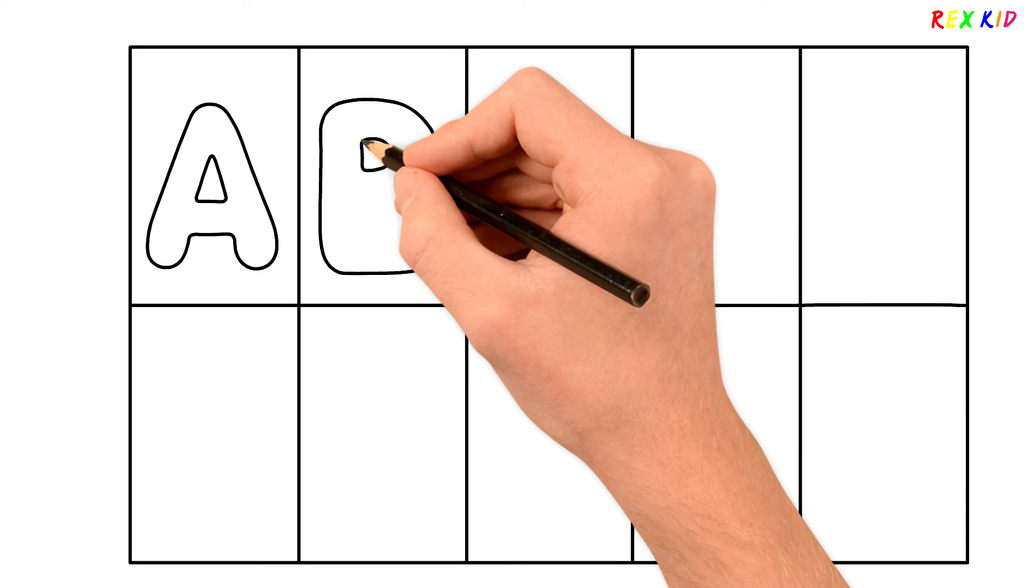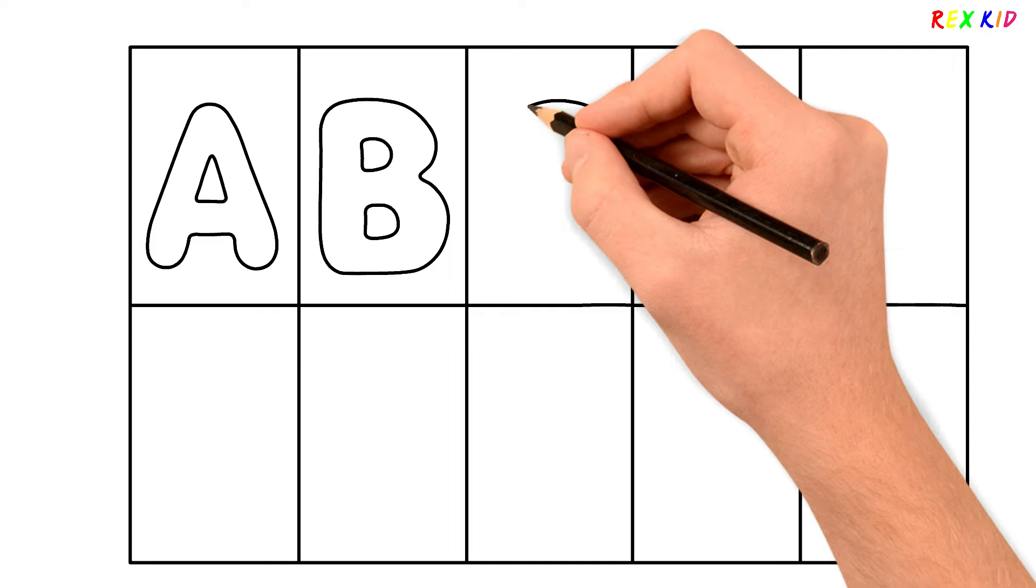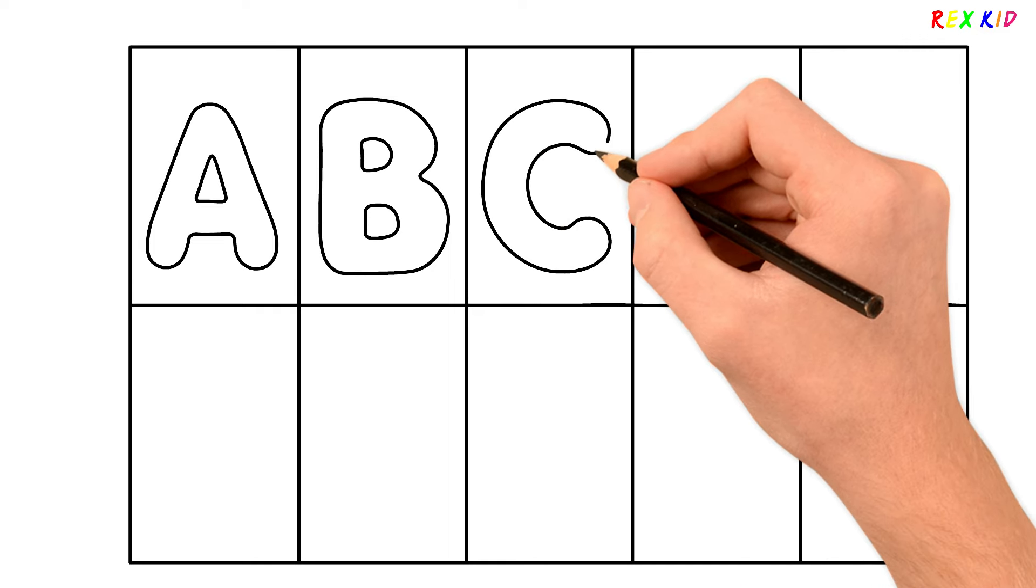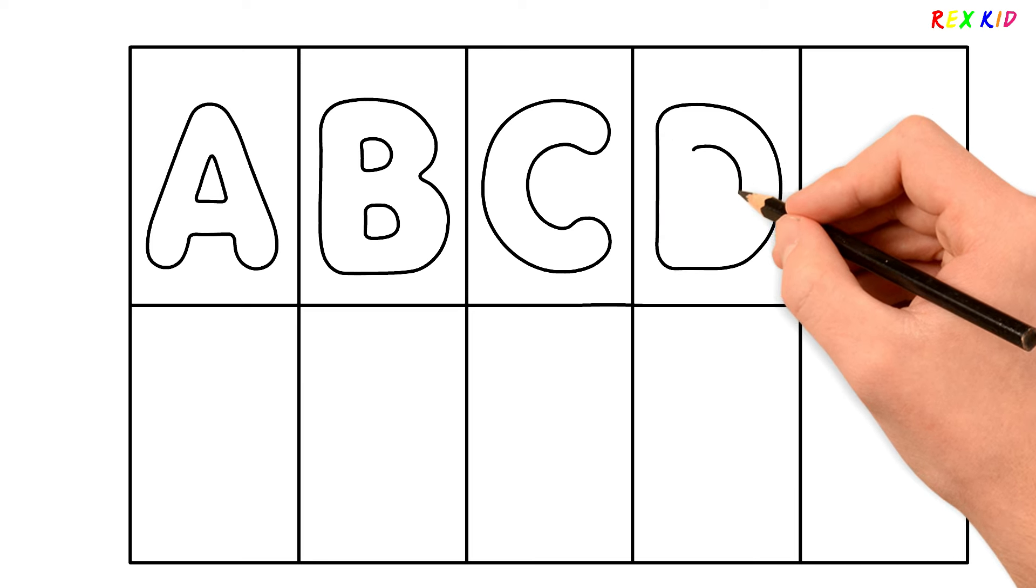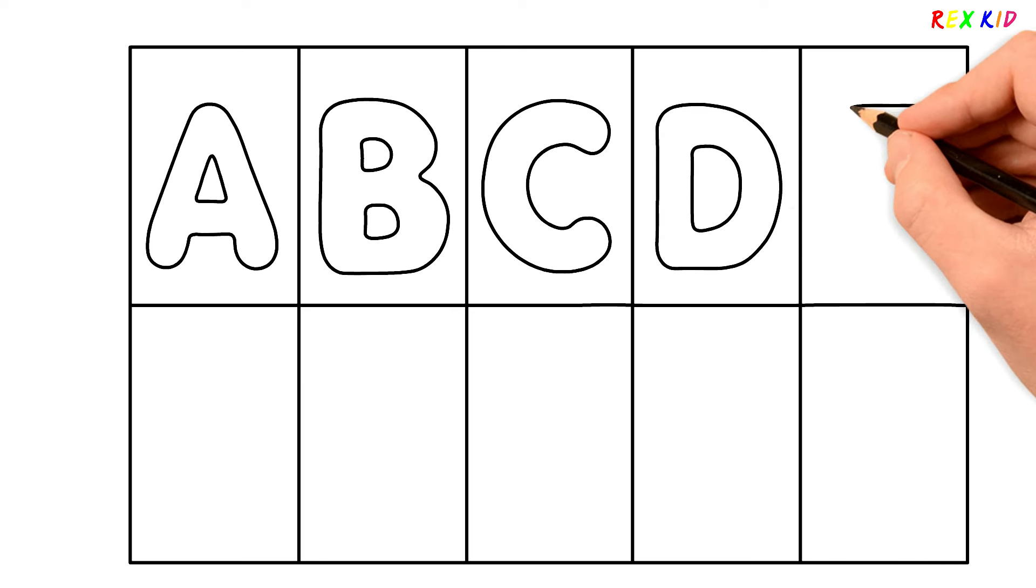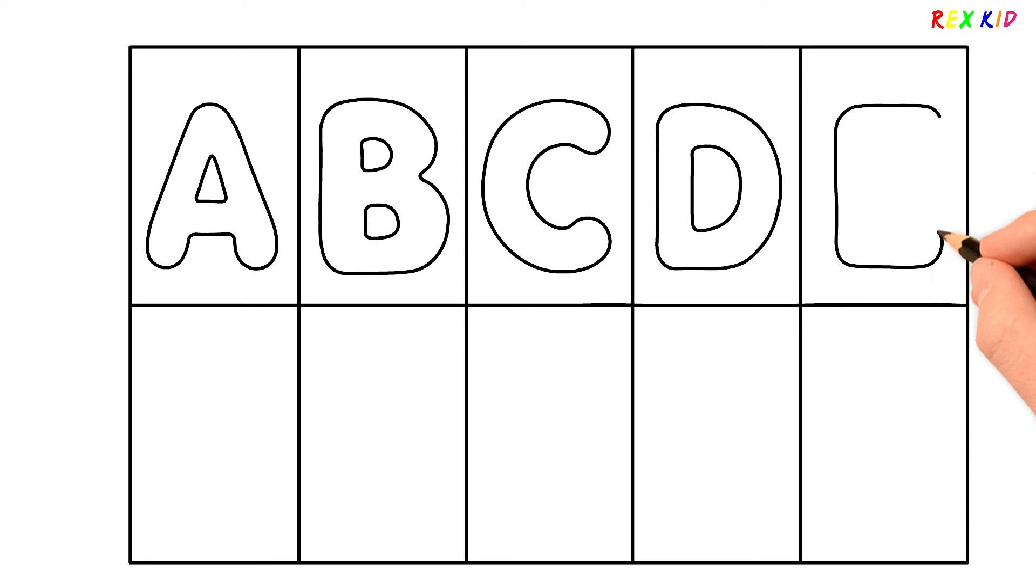This is B. This is C. I'm drawing the letter D. Try to draw and paint with me. And I'm drawing E.